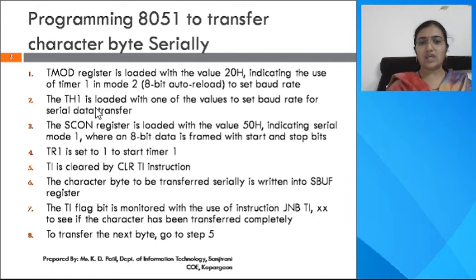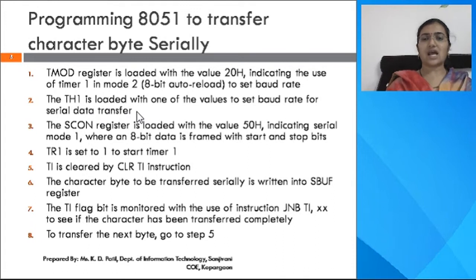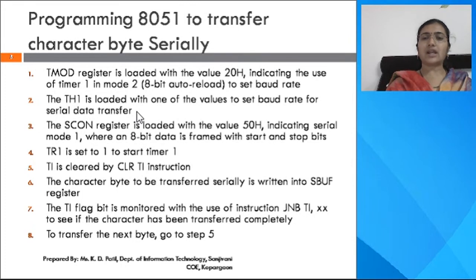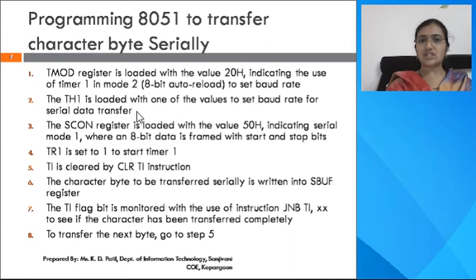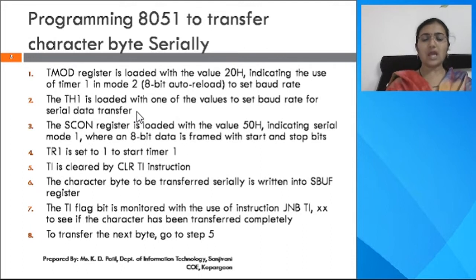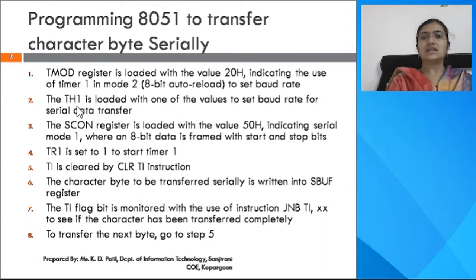After that, TH1 is loaded with a value to set the baud rate for serial data transfer. The baud rate in 8051 is programmable; we can set it to 9600, 4800, 2400, or 1200. To set the baud rate to 9600, load the value -3 decimal into the TH1 register.